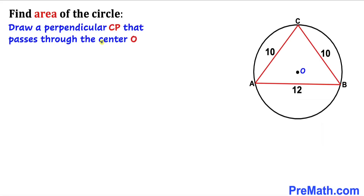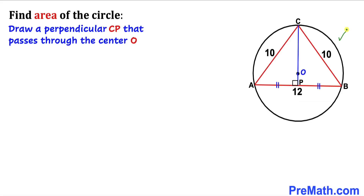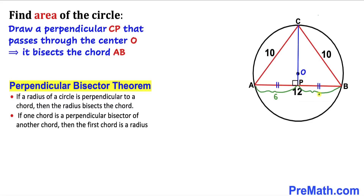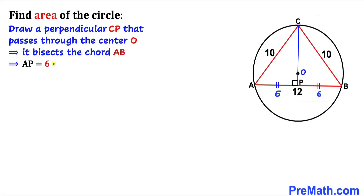Let's get started with the solution. We know that we are dealing with an isosceles triangle. Let's drop a perpendicular from point C, which passes through the center O, meeting AB at point P. By the perpendicular bisector theorem, a radius perpendicular to a chord bisects that chord. So this perpendicular bisects chord AB into two equal parts, giving us AP = 6 units and PB = 6 units.